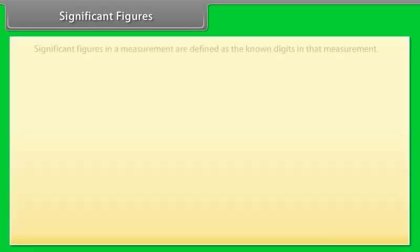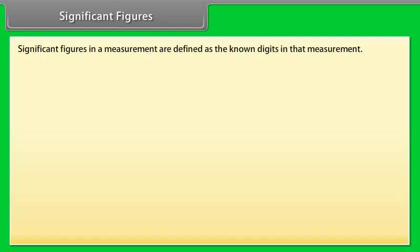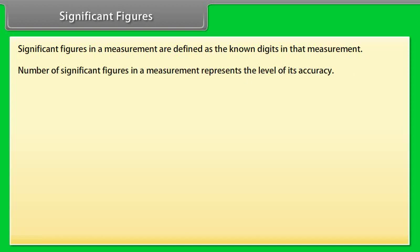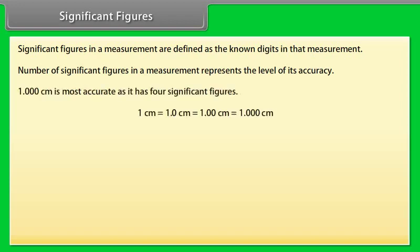Significant figures. Significant figures in a measurement are defined as the known digits in the measurement. Number of significant figures in a measurement represents the level of its accuracy. It means more the number of significant figures in a measurement, more accurate that measurement is.